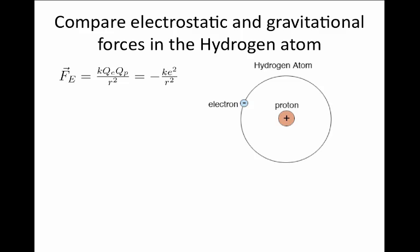Just for your reference, the separation between the electron and the proton in the atom is about an angstrom, or a tenth of a nanometer.